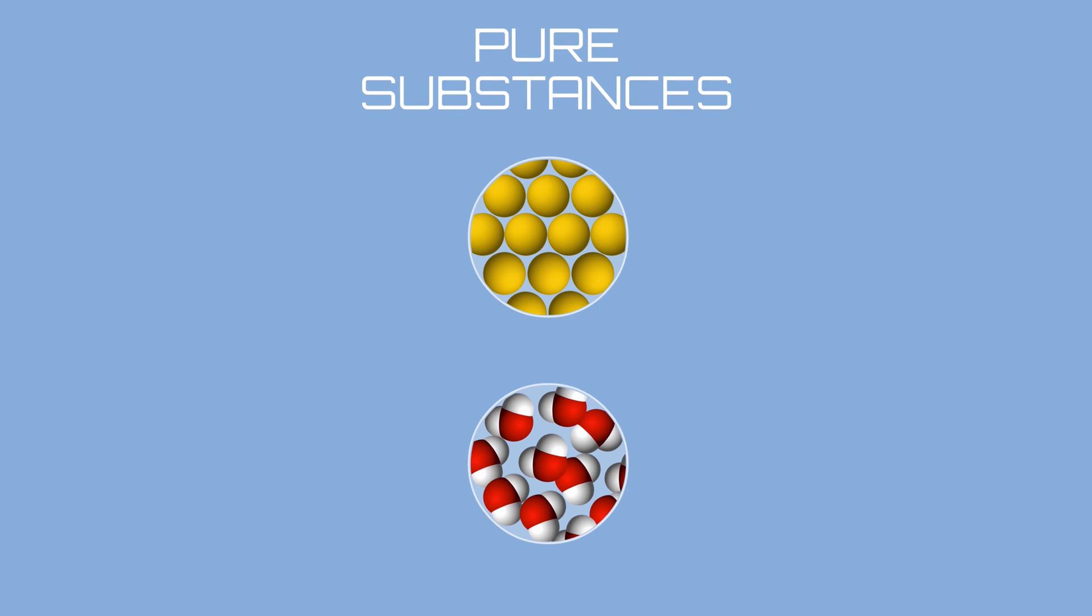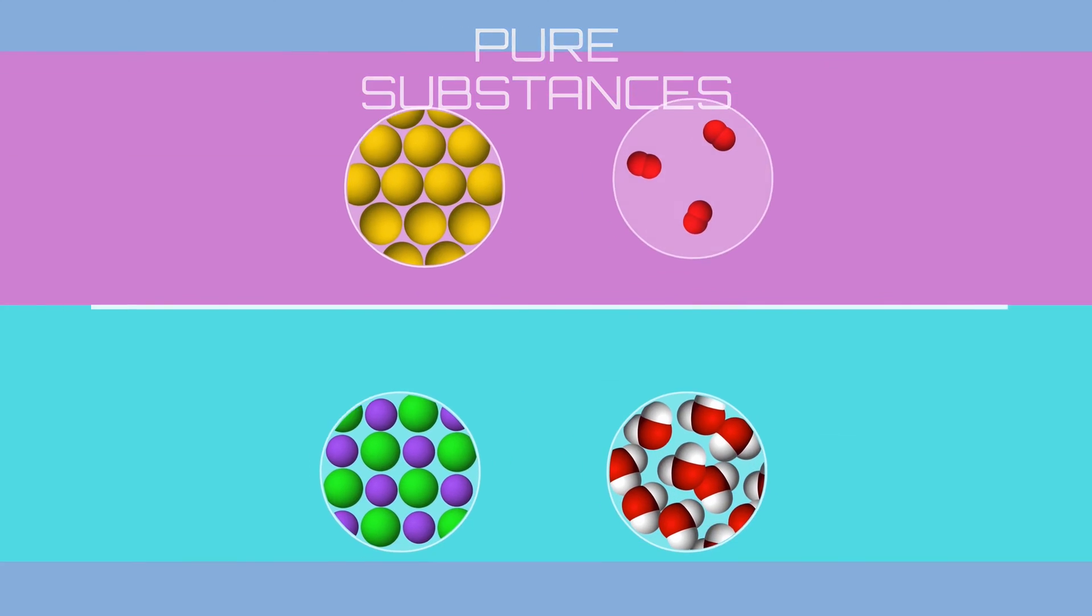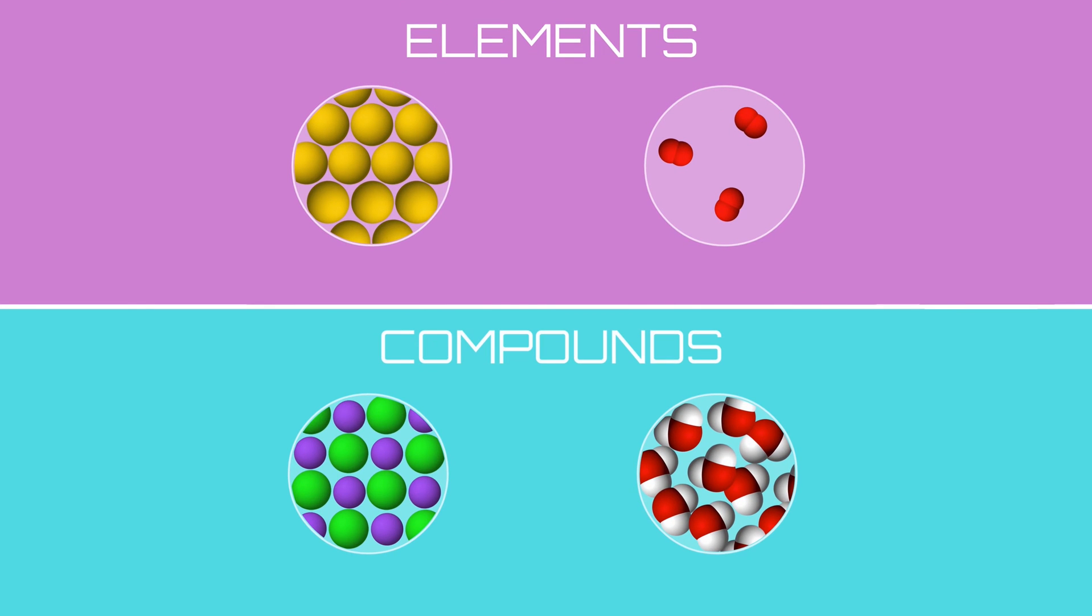A pure substance contains only one type of matter, either one single element or one single compound.